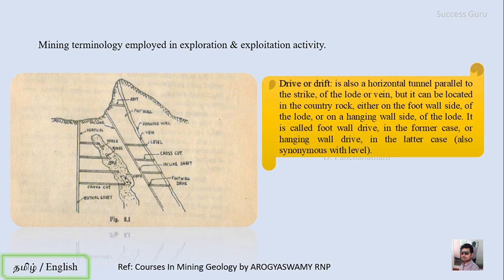The next term is drive or drift — a horizontal tunnel parallel to the strike of the lode or vein. This term is used for bedded deposits or veins. It can be located in the country rock on either the foot wall side or the hanging wall side. If on the foot wall side it is called a foot wall drive; if on the hanging wall side it is called a hanging wall drive. This is synonymous with the term level.